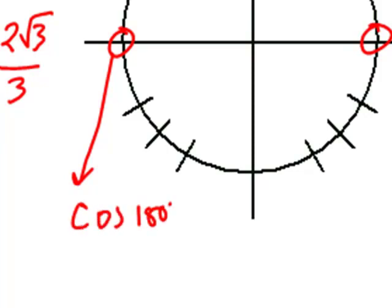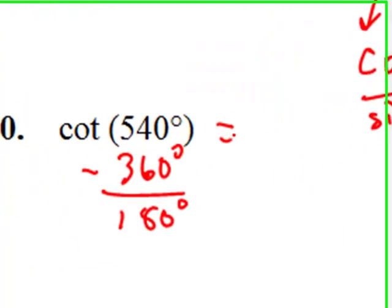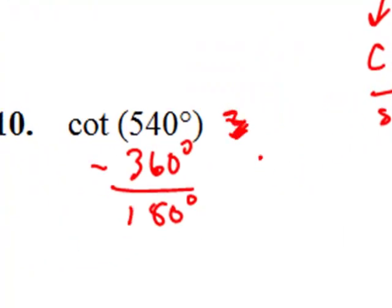Cosine of 180 divided by the sine of 180. And the cosine is negative 1 and the sine is 0. That makes this undefined. So, actually, I shouldn't say equals undefined. I'm just going to kind of cross that off there and just write undefined.